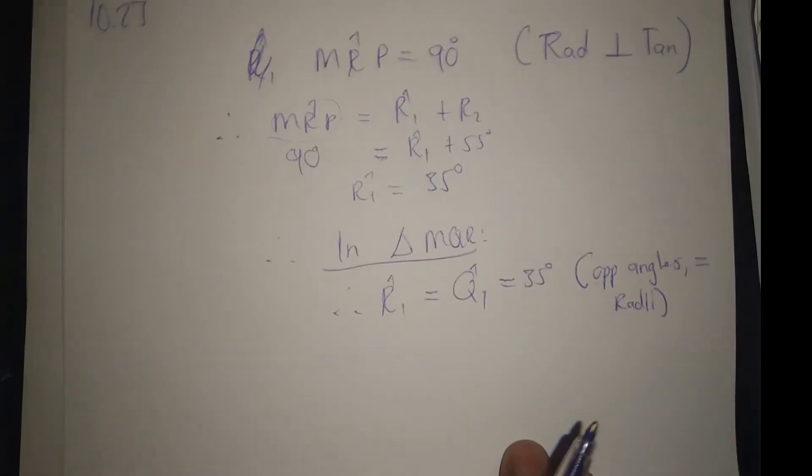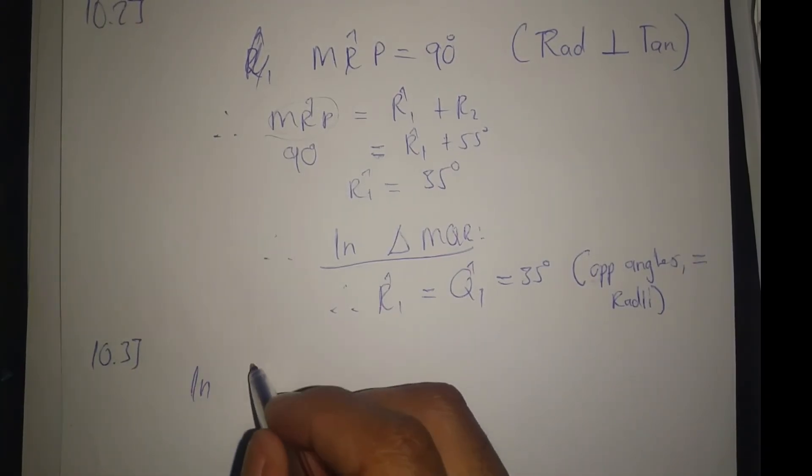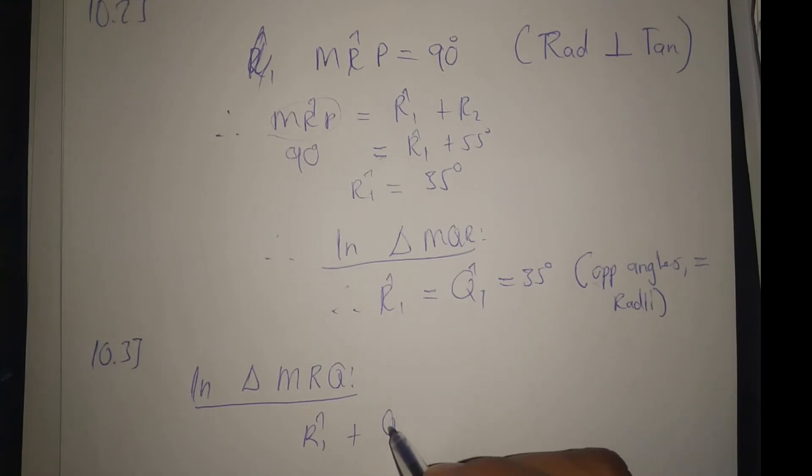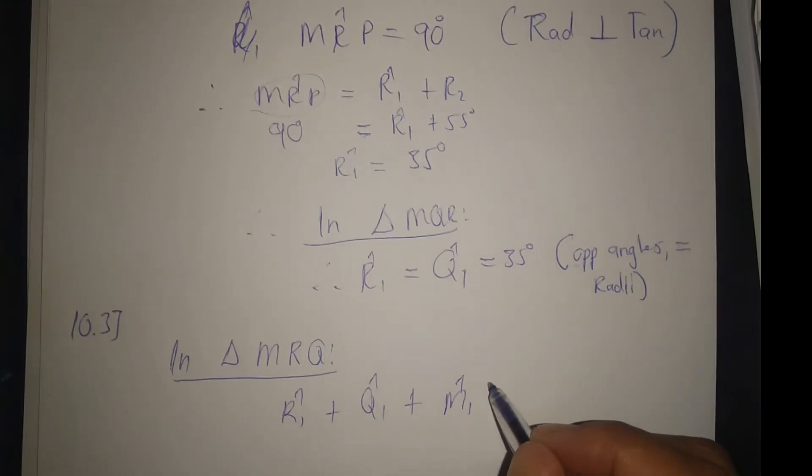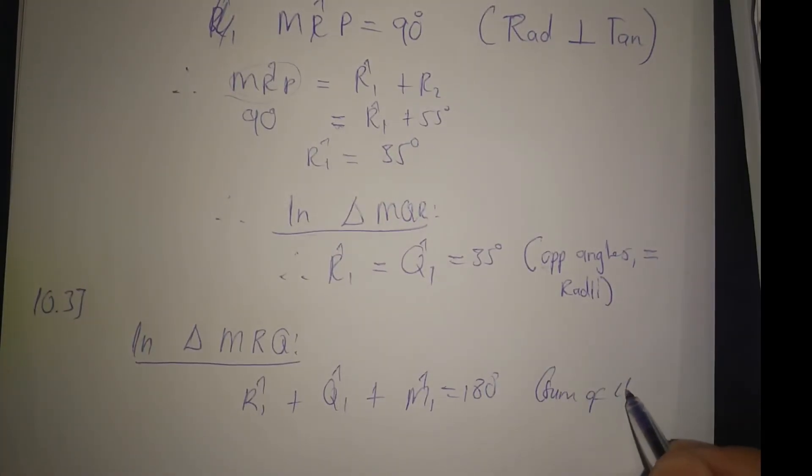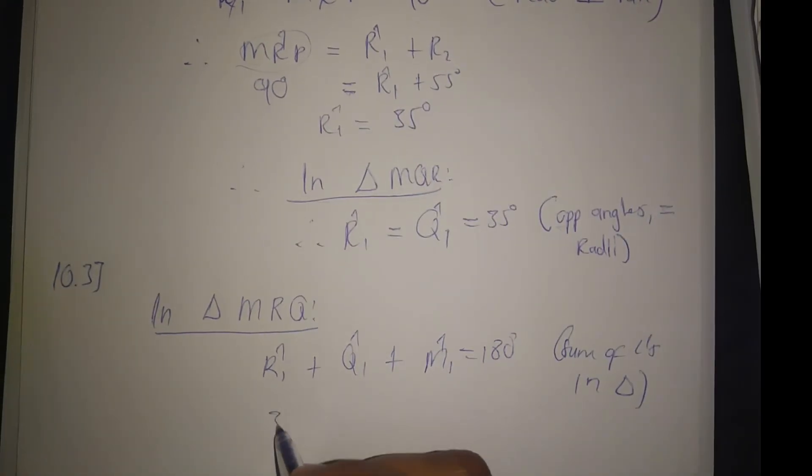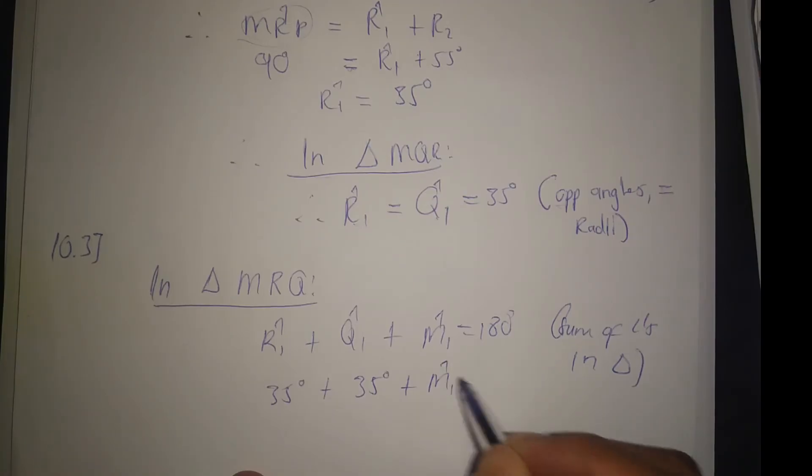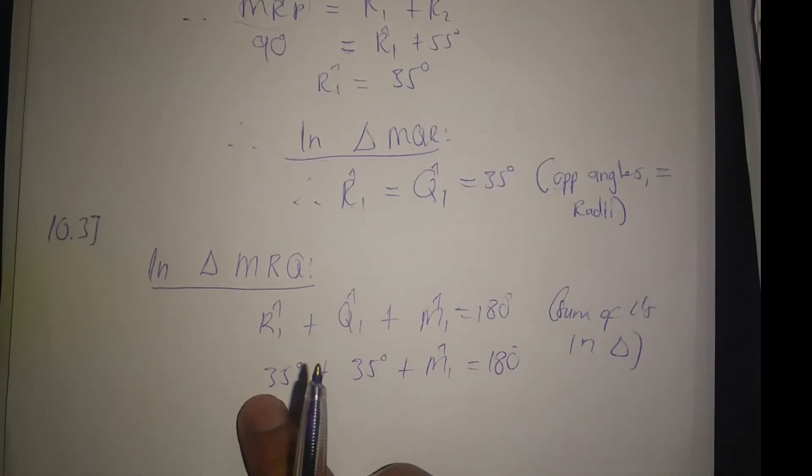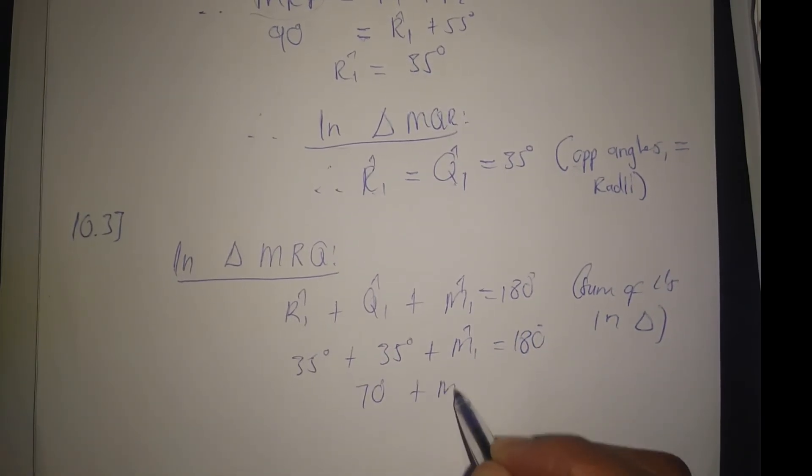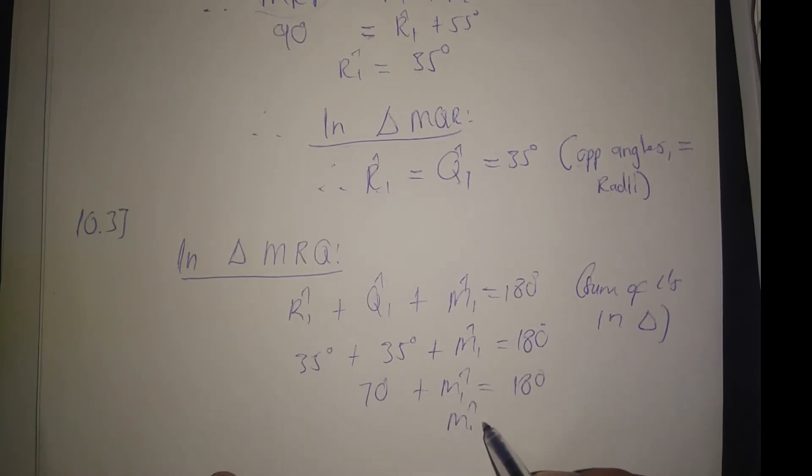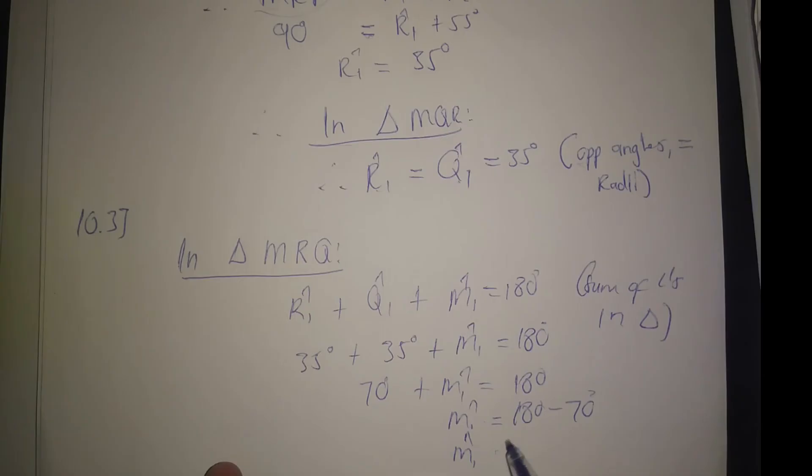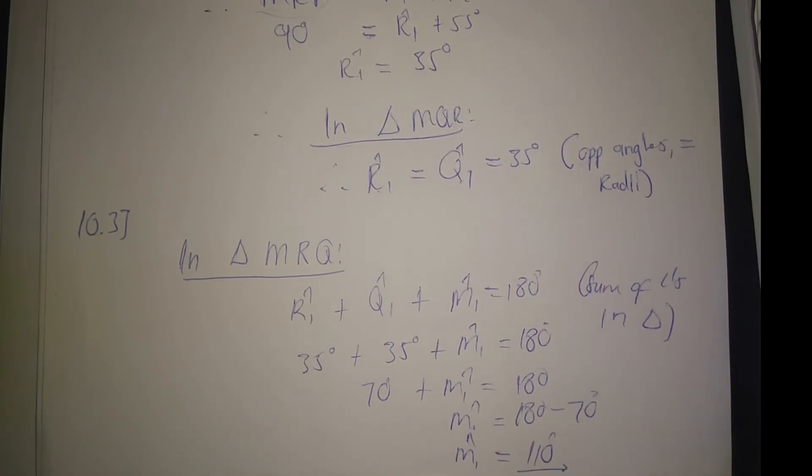So 10.3: in triangle MRQ, R1 plus Q1 plus M1 must give 180 degrees - sum of angles in a triangle. So R1 is 35 and Q1 is 35, plus M1 is equal to 180 degrees. So 70 plus M1 equals 180. M1 is equal to 180 minus 70. Therefore M1 is equal to 110 degrees.